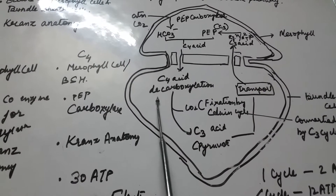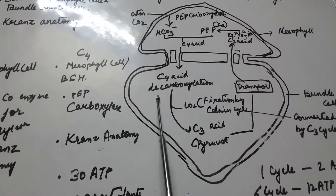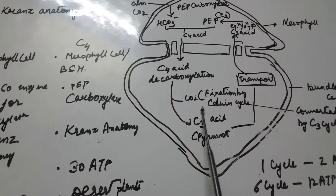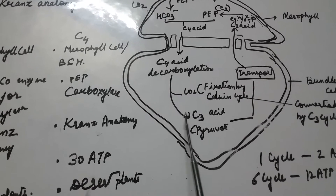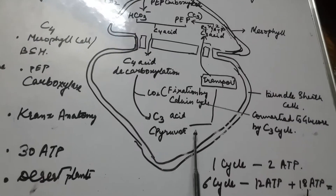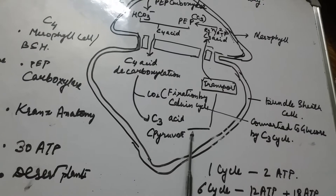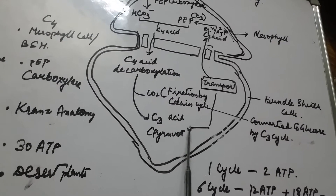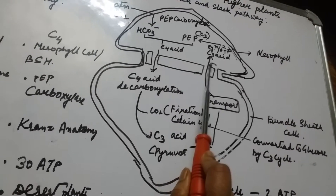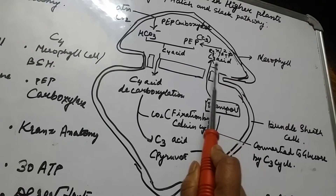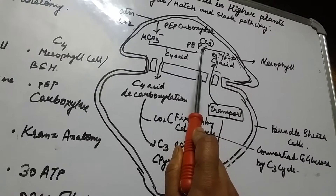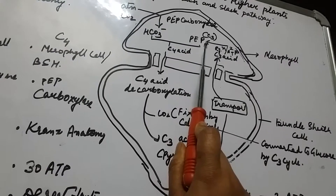In the bundle sheath cells, decarboxylation occurs — carbon dioxide is removed and further fixed by the Calvin cycle. A C3 compound, pyruvate, is formed. Glucose is synthesized within the bundle sheath cells via the C3 cycle. Pyruvate is then transported back to the mesophyll cells, where regeneration occurs with the utilization of two ATP molecules to reform phosphoenolpyruvate (PEP), a C3 compound.